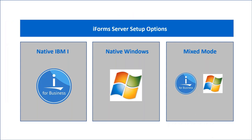Before I get to the live demonstration portion, I'd like to talk about how the server can be configured and what systems we can run on. There are really three ways the software can be configured to run. The first one is native IBMI, so it can run native on the IBMI system itself. It can also run native Windows, and it can run in a mixed mode process as well.